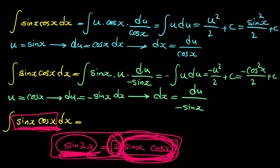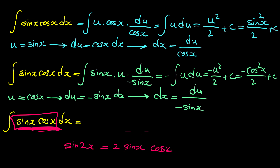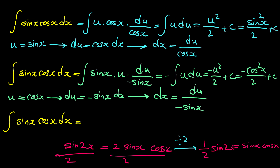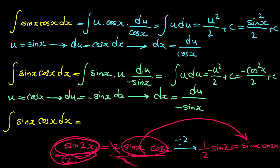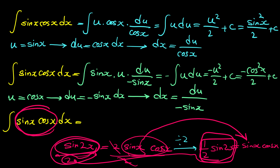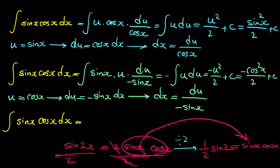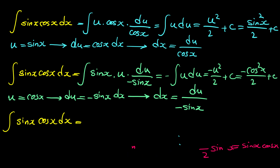If we divide both sides of that identity by 2, we get sine x cosine x equals one half sine of 2x. So instead of sine x cosine x inside the integral, we can write one half sine of 2x.